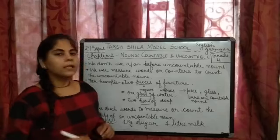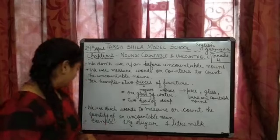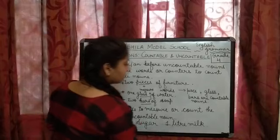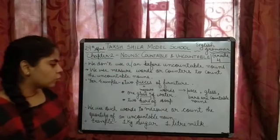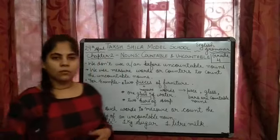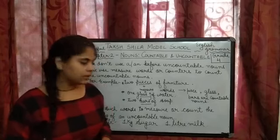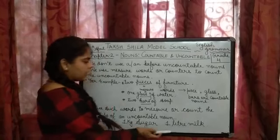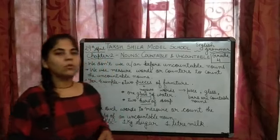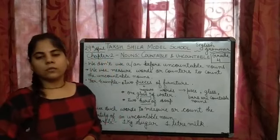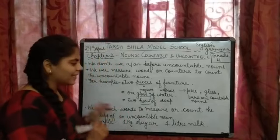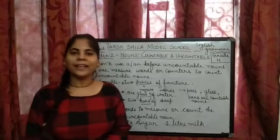Let's take one more example: one kg sugar, one liter milk. With sugar and milk, what do we use? We use other counters — one kg, one liter — to measure the uncountable noun. I hope this topic is clear to you and you enjoyed it. Thank you.